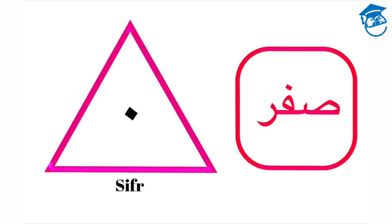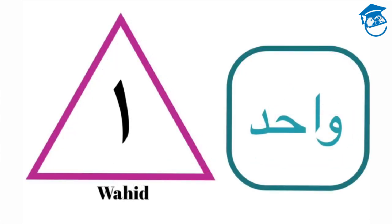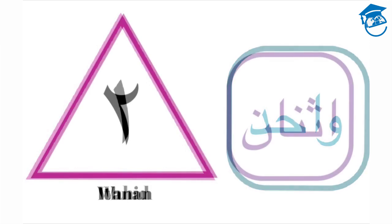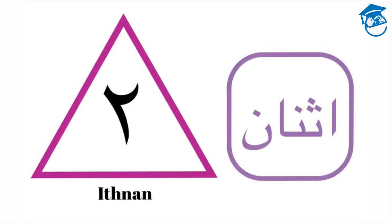The word for zero in Arabic is sifr, and it's written as a point. Our next number is wahed — wahed means one. Ithnan — ithnan is two.